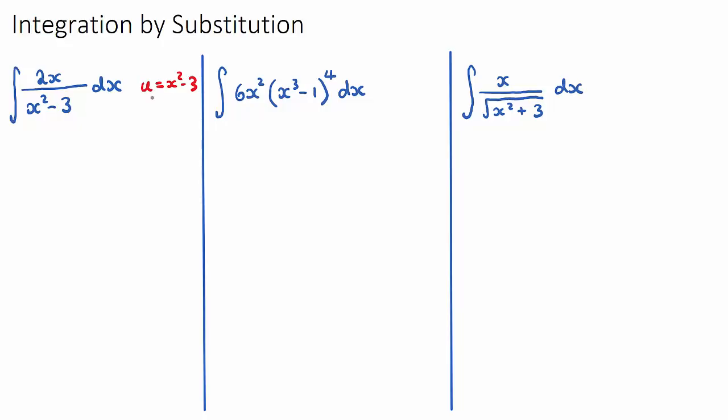Next, we need to take u and find the derivative, and we want to write it as du/dx. We're going to derive this u here in terms of x, which will be 2x. There's actually a few ways you can do integration by substitution. I'm going to show you the method that I currently use, and I think it's pretty simple.